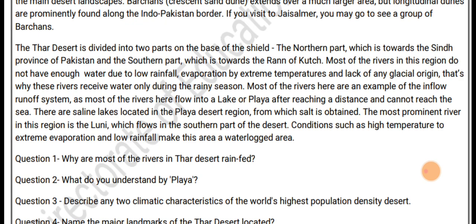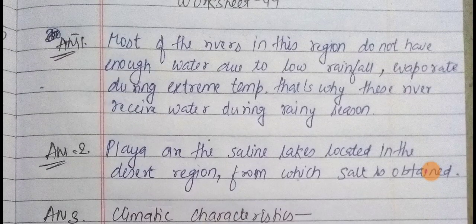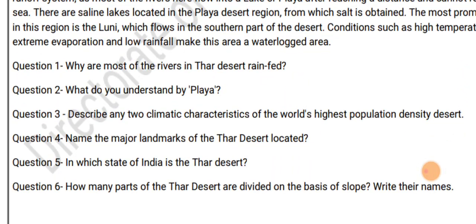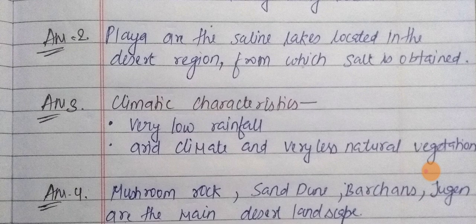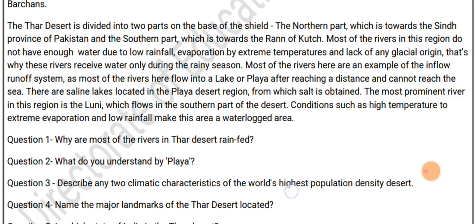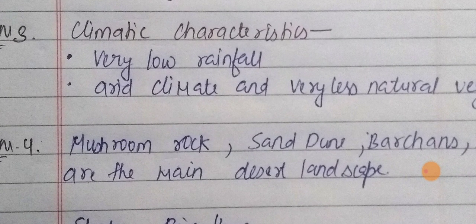Question 1: Why do most rivers in the Thar Desert lack water? Most rivers do not have enough water due to low rainfall and extreme evaporation, so they receive water only during the rainy season. Question 2: What is a playa? A playa is a saline lake located in the desert region from which salt is obtained. Question 3: Name two climatic characteristics of the Thar Desert. Very low rainfall, arid climate, and very less natural vegetation.